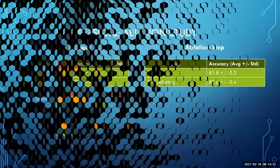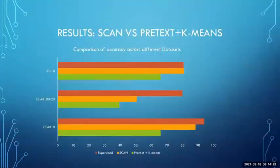In these ablation studies, they show that SCAN outperforms both the pretext task plus k-means clustering. In the case of STL-10, SCAN slightly outperforms the supervised classification task. And what is even interesting here is that the pretext task plus k-means clustering tends to outperform some of the state-of-the-art methods like DeepCluster, which we'll see in this next slide.